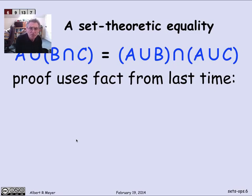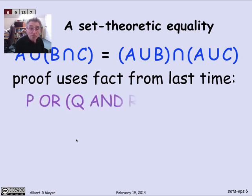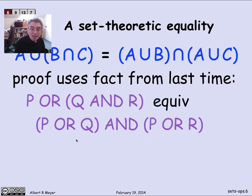It turns out that the proof is going to follow by analogy to a propositional formula that we're going to make use of in the proof. That was a propositional equivalence that we proved in an earlier talk, namely that or distributes over and. So P or Q and R is equivalent to P or Q and P or R.